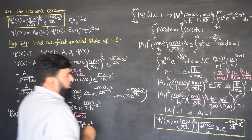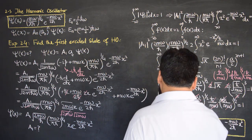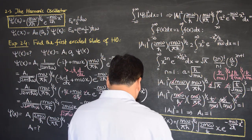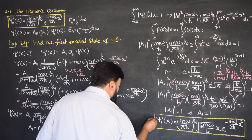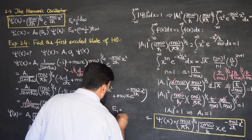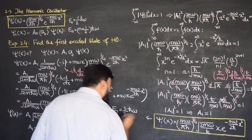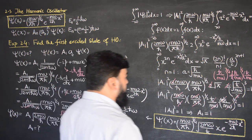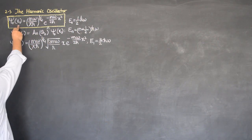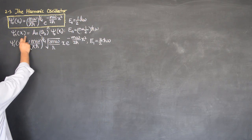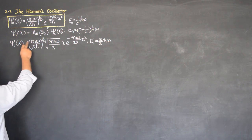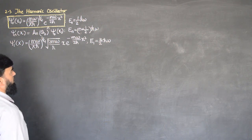This wave function possesses energy with n = 1, so it will have energy E₁ = (1 + 1/2)ℏω = 3/2 ℏω. This is the energy associated with this wave function. We found the ground state wave function, then using the raising operator equation we got the nth wave function, and by utilizing that equation we obtained the first excited state of the harmonic oscillator.